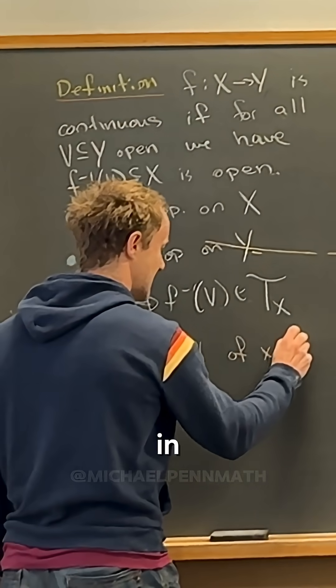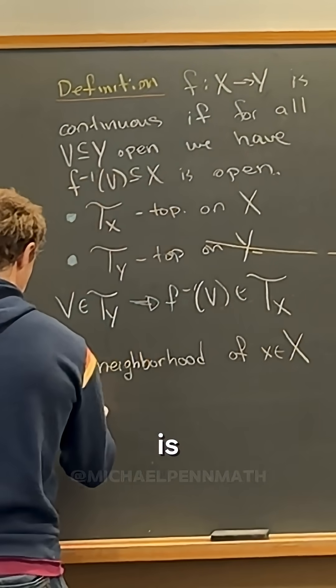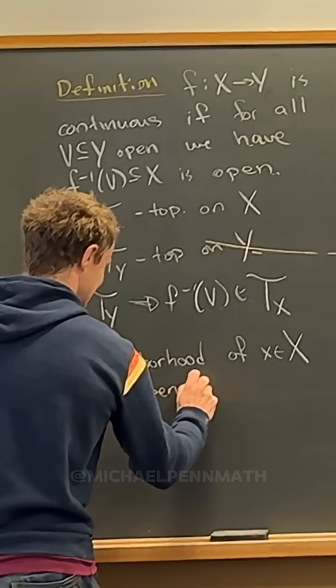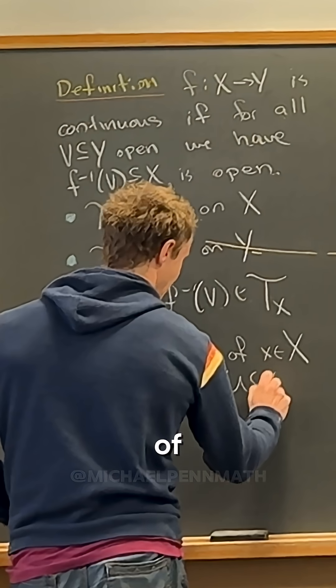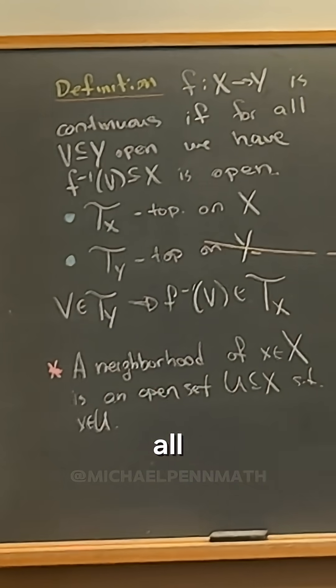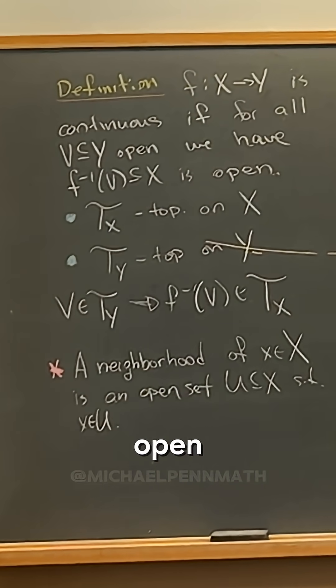So a neighborhood of x in X is an open set U of x such that x is an element of U. That's it. All it is is an open set containing the point. That's a neighborhood.